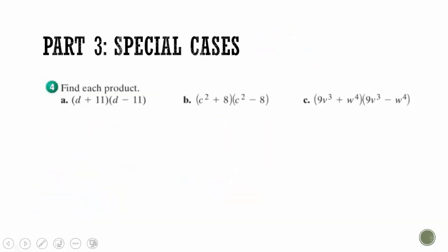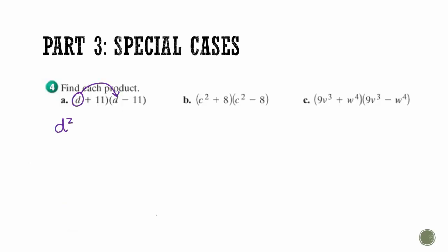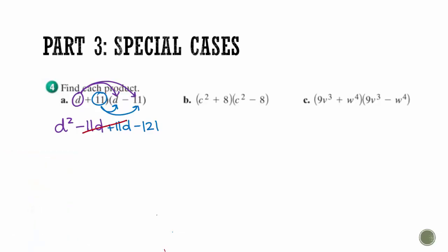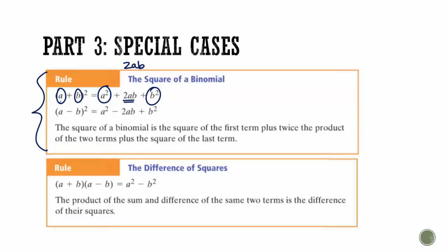The other special case is expressions like (d + 11)(d − 11) — the same thing but with different signs. When we distribute: d times d gives d squared, d times negative 11 gives negative 11d. Then distributing positive 11: positive 11d, and then negative 121. When we combine like terms, the negative 11d and positive 11d cancel, leaving just d squared minus 121. These are called the difference of squares — any time you have the same terms with one plus and one minus, the middle terms will always cancel.